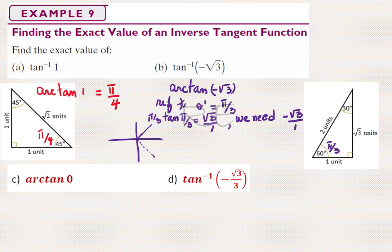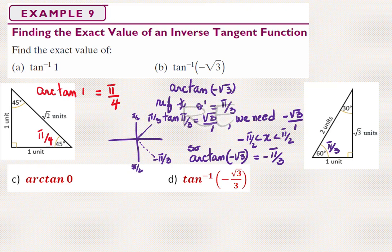Tangent of π/3 is √3 (opposite over 1). However, we need negative √3 over 1, and that arc must be located strictly between negative π/2 and π/2. Therefore, we go clockwise from 0 and take the arc of negative π/3, which is in the fourth quadrant where tangent is negative. So the arc whose tangent is negative √3 is equal to negative π/3.